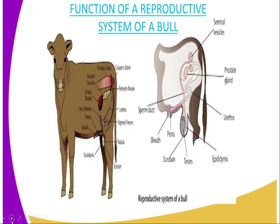The scrotum ensures that the temperature of the sperm is adjusted so that the sperm will not die as a result of high temperature.